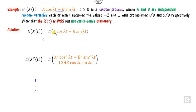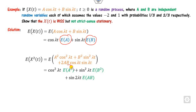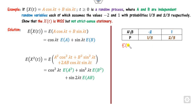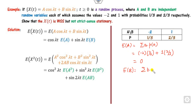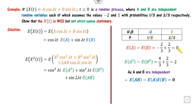Since a and b each take values minus 2 and 1 with probabilities 1/3 and 2/3 respectively, E[a] = (-2)(1/3) + (1)(2/3) = 0. Similarly E[b] = 0. For E[a²] = (-2)²(1/3) + (1)²(2/3) = 4/3 + 2/3 = 2. Since a and b are independent, E[ab] = E[a]·E[b] = 0. Substituting these, the mean E[x(t)] = 0, which is constant.